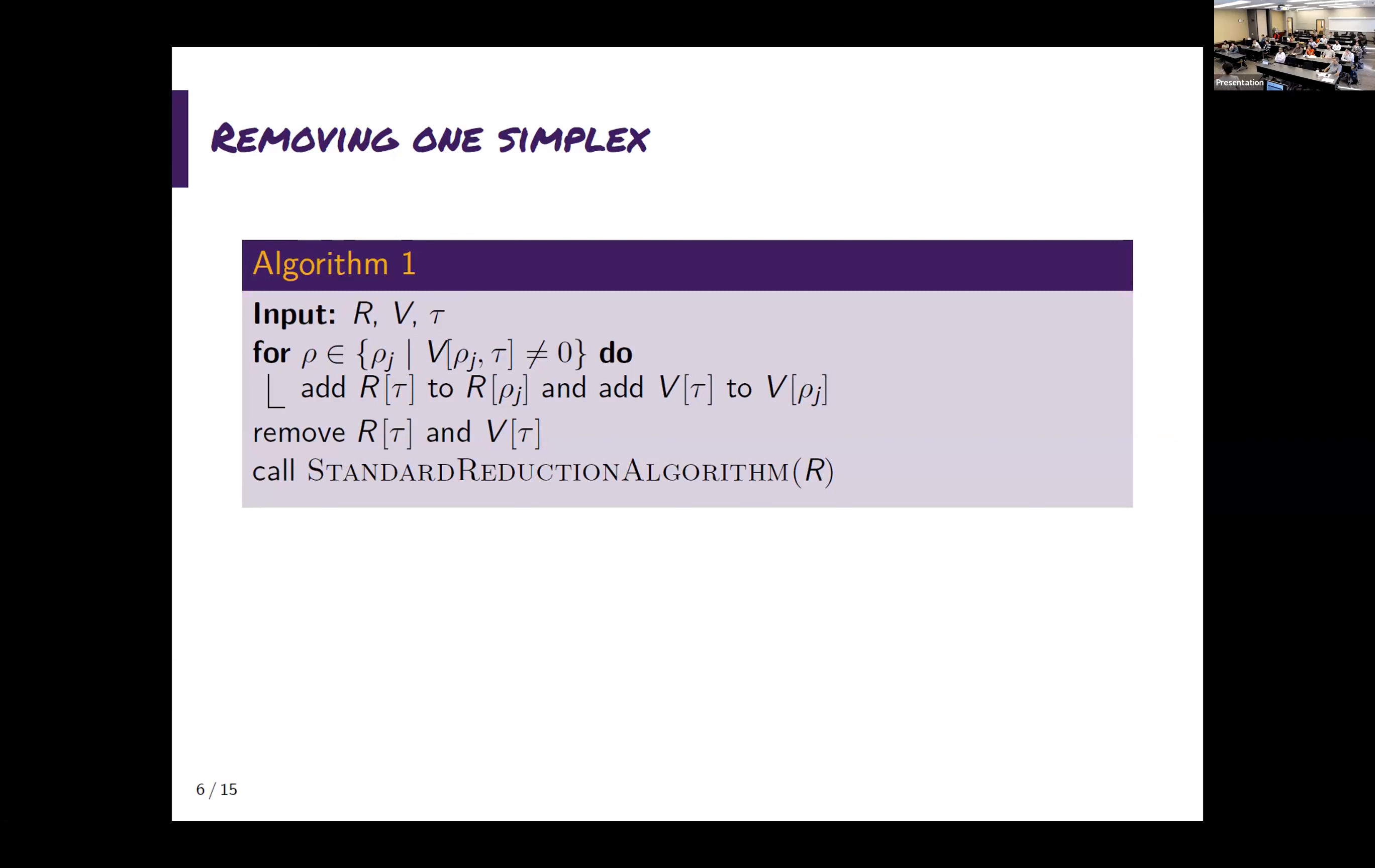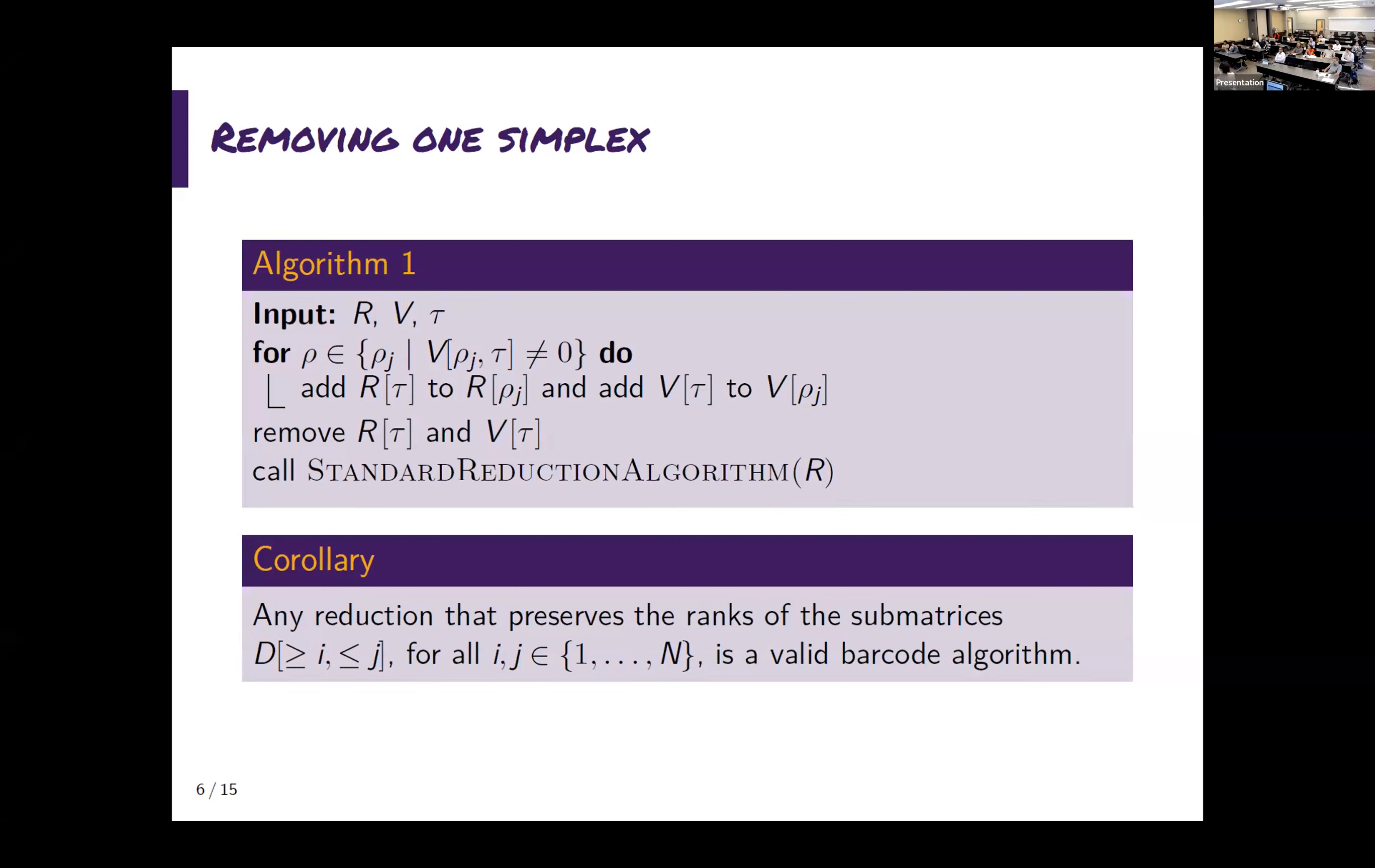Let me just give you an intuition of why this works. The idea of the pivot pairing of Edelsbrunner and Harer was the so-called pairing lemma that is telling you that you have a pivot pairing if and only if the alternating sum of certain matrices or the rank of certain sub-matrices is one. So basically, this corollary is a corollary of that lemma, and it's telling you that every operation you do that preserves the rank of these lower left matrices is a valid barcode algorithm. So you don't actually need to do left-to-right column operations. You can do whatever you want as long as you preserve those ranks. So that's the idea.